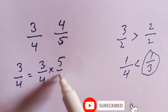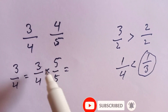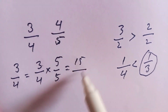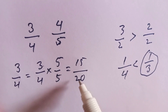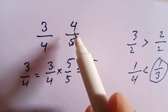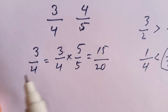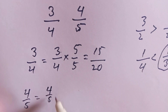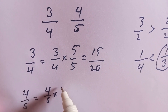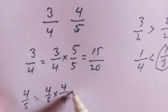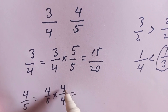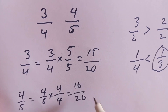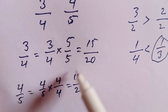3 times 5 is 15 and 4 times 5 is 20. Now we make the equivalent fraction of 4 over 5: 4 over 5 equals 4 over 5 times 4 over 4. 4 times 4 is 16 and 5 times 4 is 20.